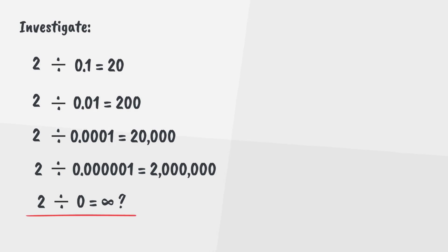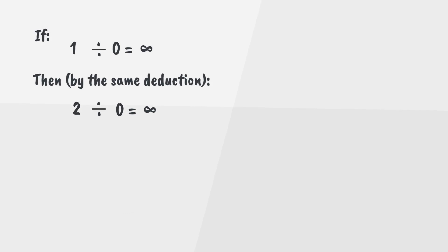But if we let our values equal infinity, we could state the following. If 1 divided by zero equals infinity, then by the same deduction, 2 divided by zero also equals infinity. And equating both equations gives us that 1 equals 2, which is a contradiction.